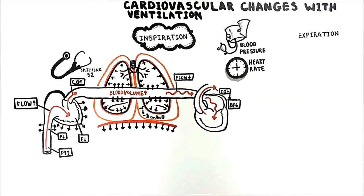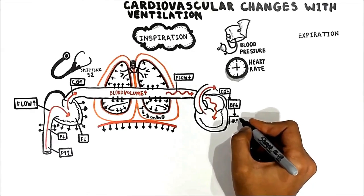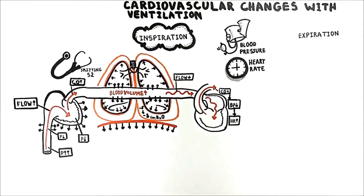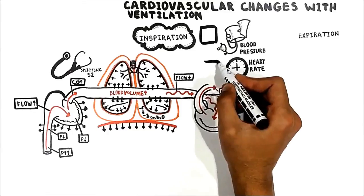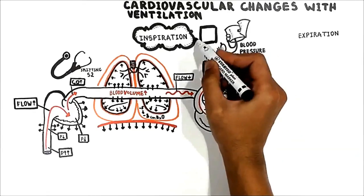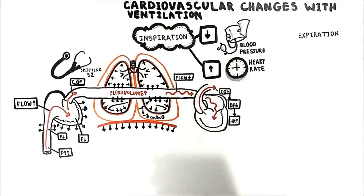Momentarily decreasing the blood pressure reduces the vagal tone to the heart, causing a transient increase in heart rate. If the vagal tone is reduced, the heart rate increases. This is what is called the paradoxical fall in pressure during inspiration. To sum it up, during inspiration the blood pressure decreases and heart rate increases.